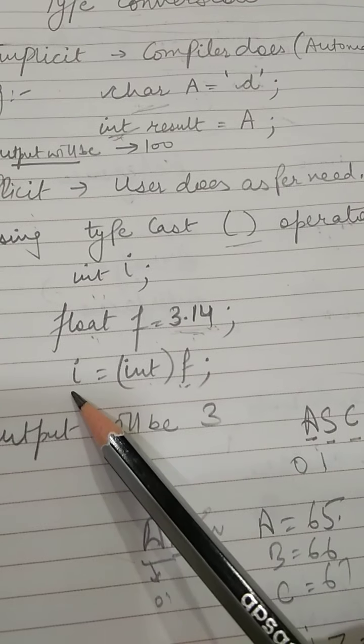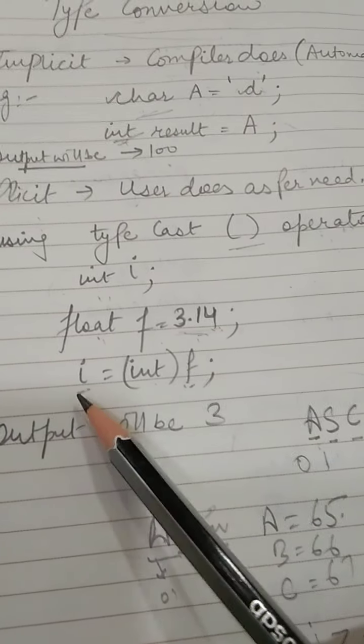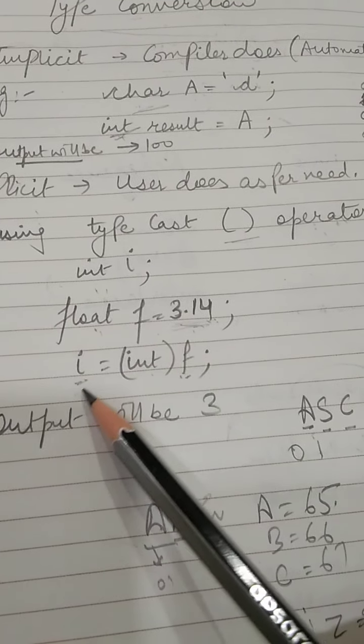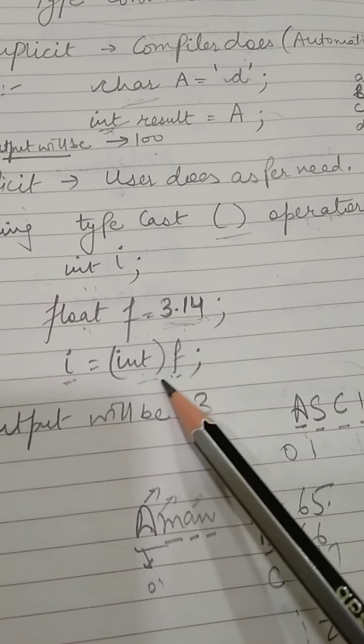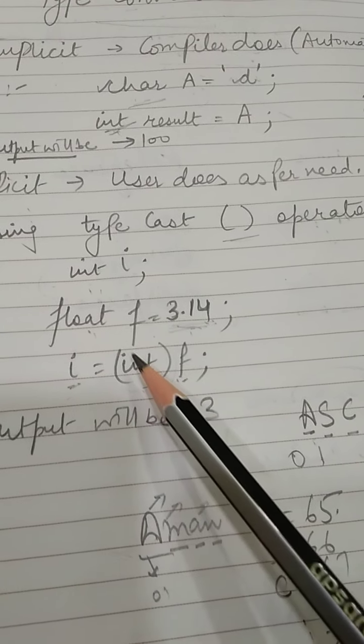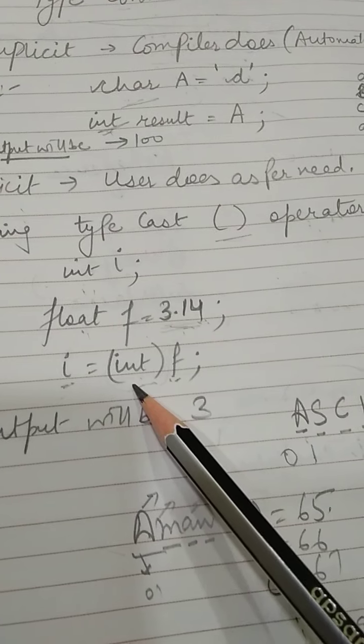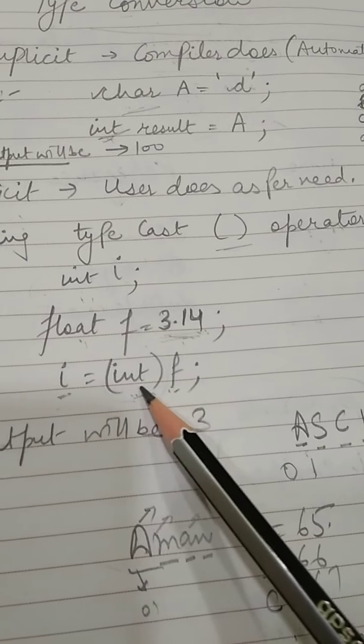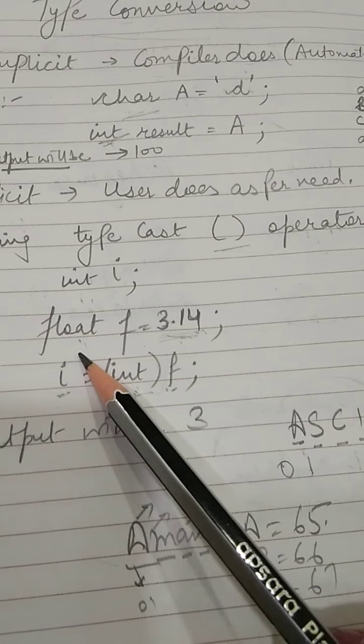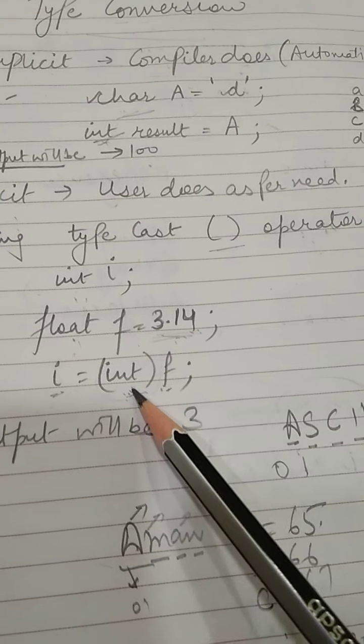That means f value has to be converted and stored in i, but only the integer part. So I will write here, specifically in brackets, we have to mention the type - in which data type you want to change it. Now f was float type, we have written here int type.